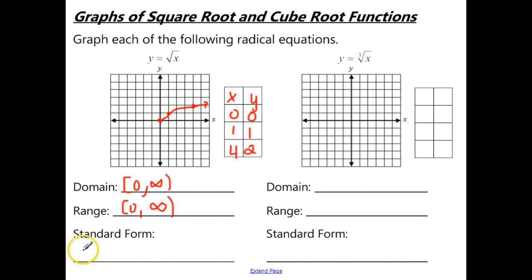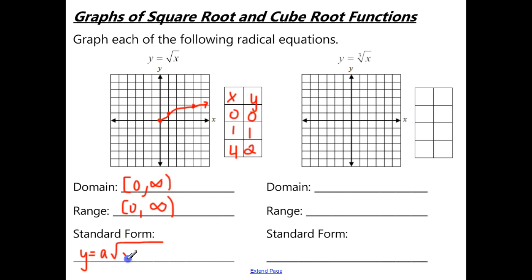The standard form is similar to what we discussed when we talked about transformations. We have 'a' in front, which changes the reflection, stretch, or compression. Then we have (x − h) inside the square root for the horizontal shift, and outside we have k for the vertical shift.